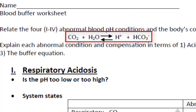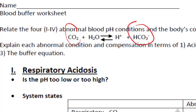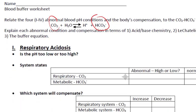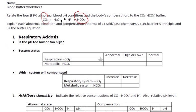CO2 in water produces a hydronium ion and bicarbonate. So the weak acid is CO2, and the conjugate base is bicarbonate. I want you to explain each condition with basic acid-base chemistry, Le Chatelier's principle, and the buffer equation.